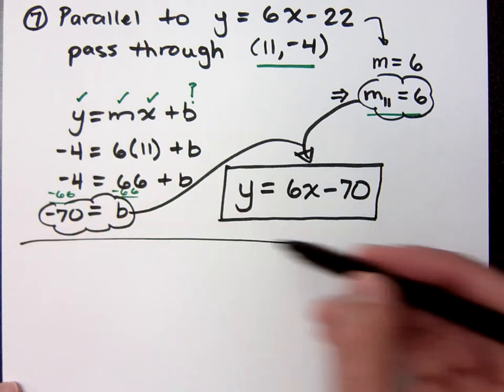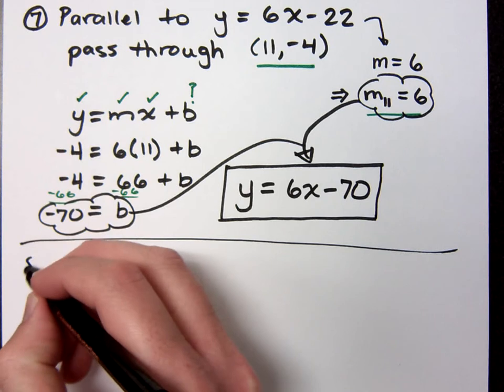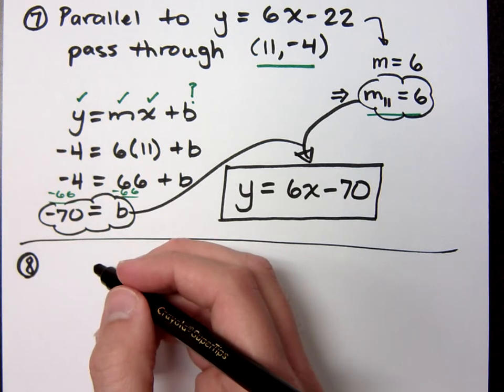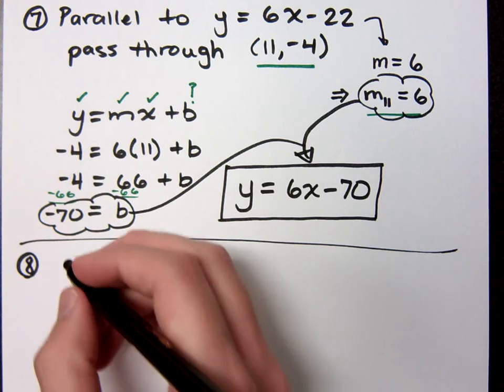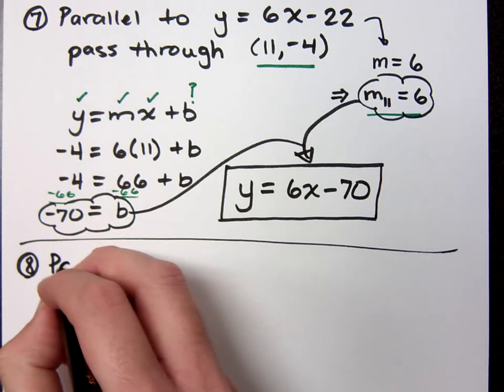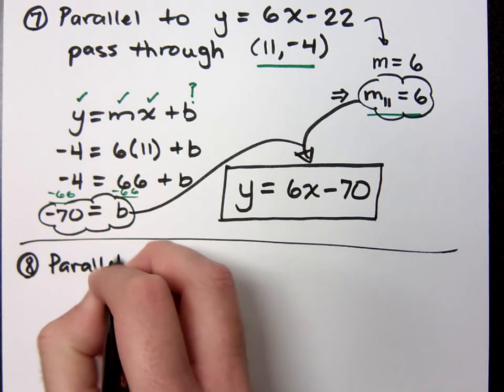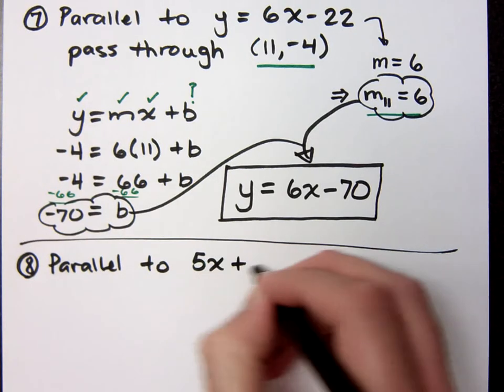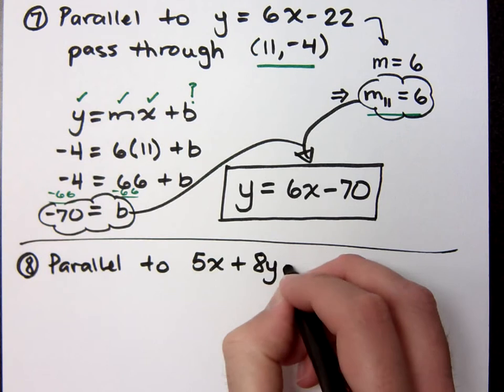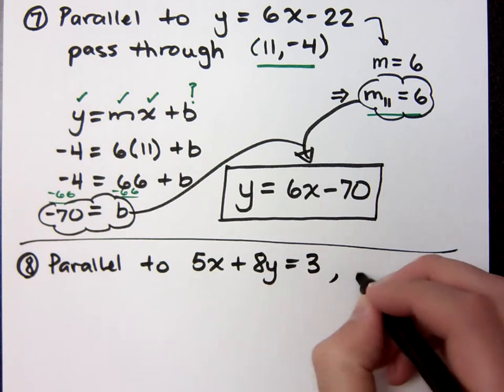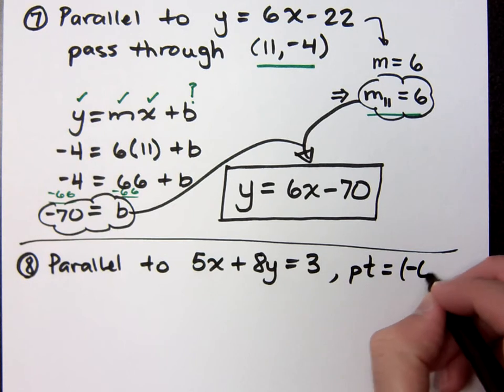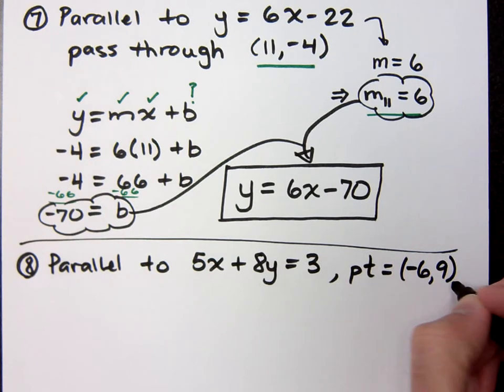Now, let me change it up just a little bit for you. We still want to be parallel, but I want to show you an easier way, depending on the form that you start with. All right, so suppose I want you to be parallel to 5x plus 8y equals 3, and the point that we want to go through, the point that's on our new line, is (-6, 9).